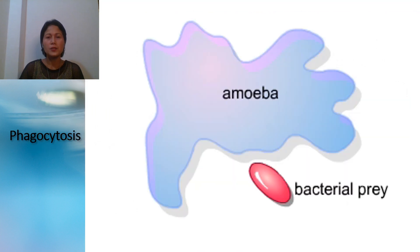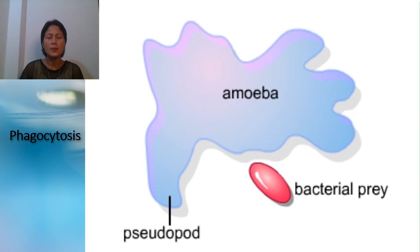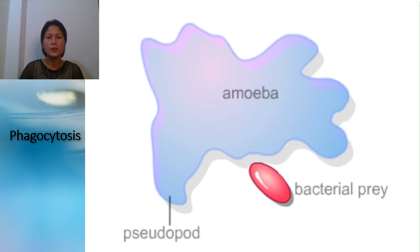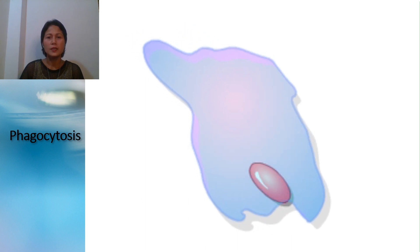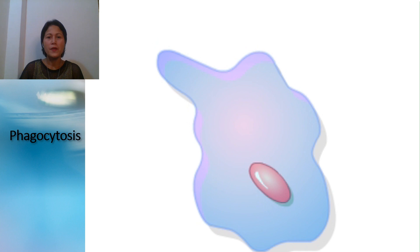Another function of the cell membrane is phagocytosis. Phagocytosis is an active form of endocytosis by which an amoeba can capture prey using its pseudopods. The plasma membrane extensions fuse together, engulfing the prey in a phagocytic vesicle. Such vesicles fuse with lysosomes in the cytoplasm and their contents are digested.